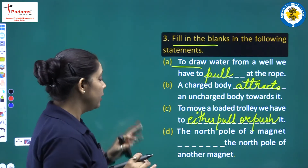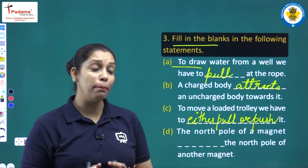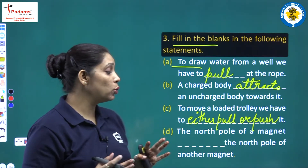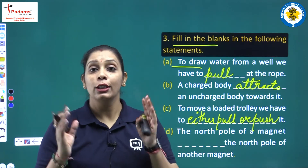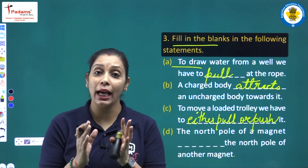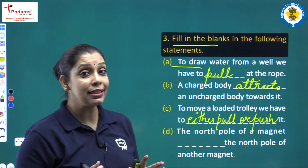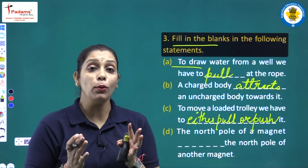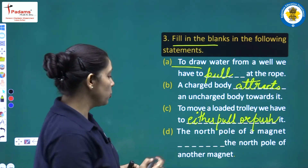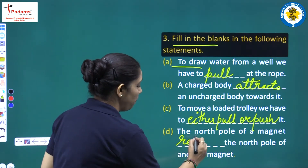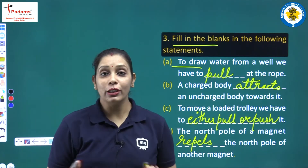The fourth blank: the north pole of a magnet repels the north pole of another magnet. You already know that opposite poles of a magnet attract each other and same poles repel each other — so fill in 'repels'. All the fill in the blanks are clear.